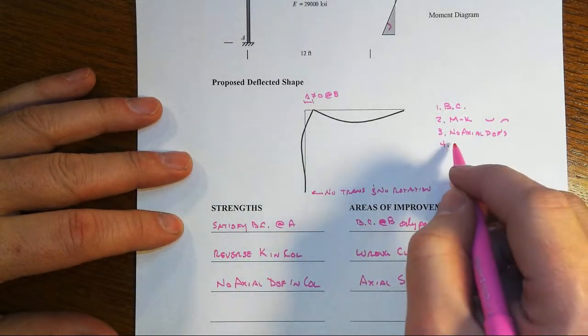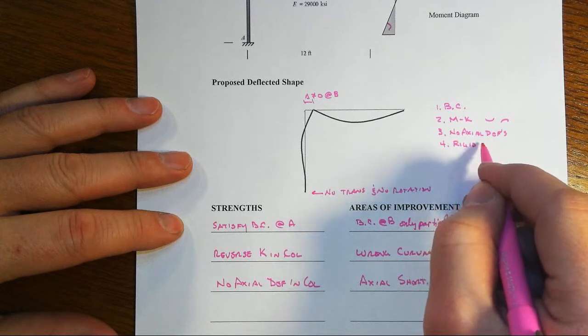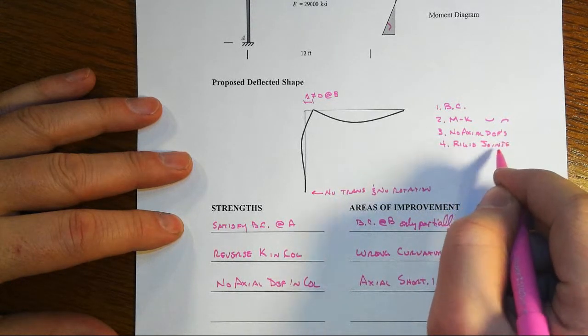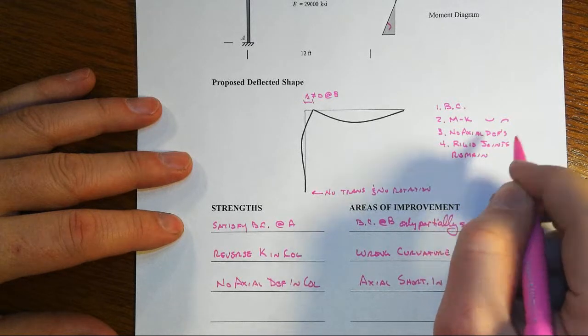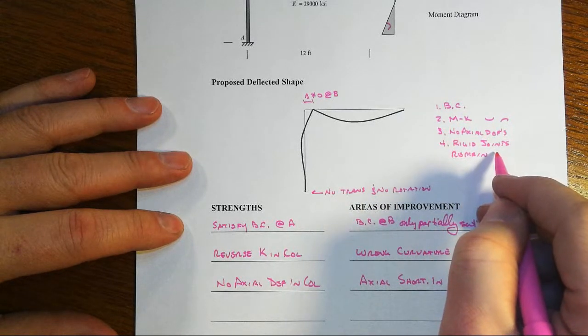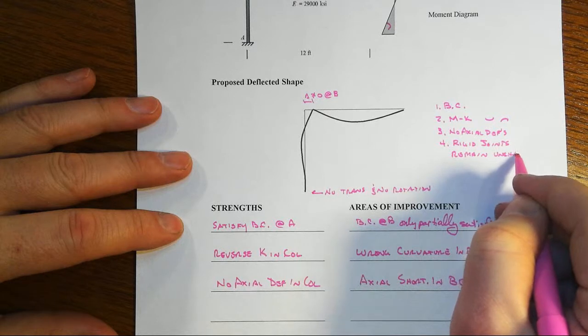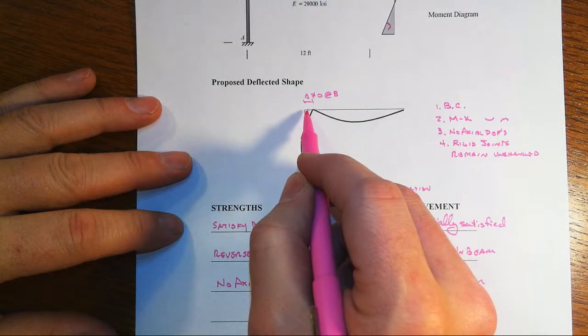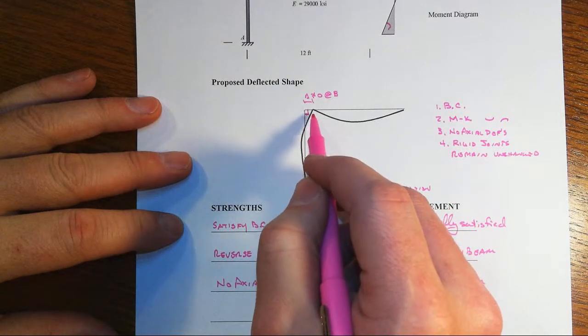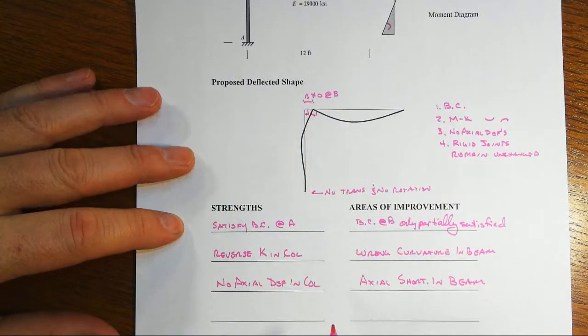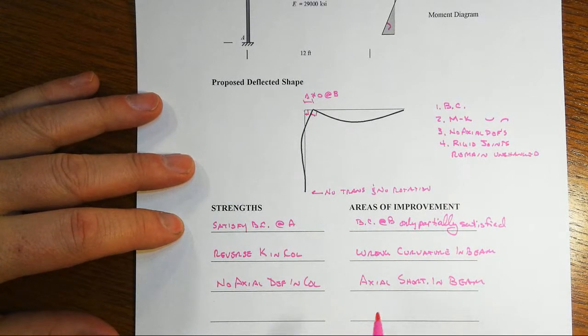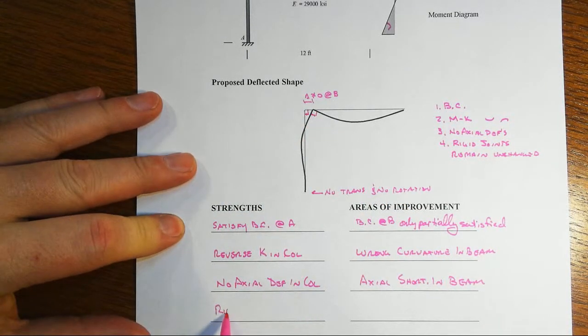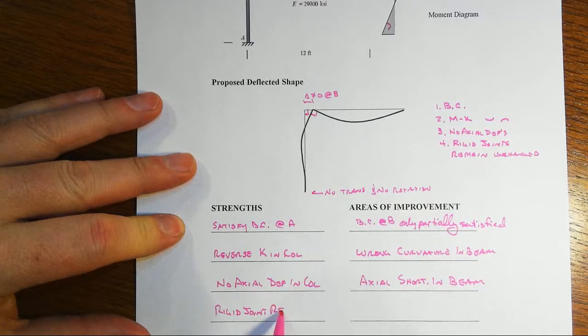And then the last one is that we should have rigid joints that remain unchanged, meaning they don't have any relative deformation. They have displacement but not deformation. So we only have one joint to really look at here, that would be right at the beam column interception. That originally starts off at 90 degrees, looks like after rotation and the inappropriate translation we actually have a good thing. So the rigid joint remains unchanged.